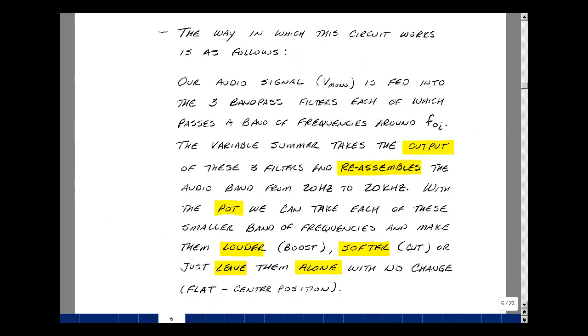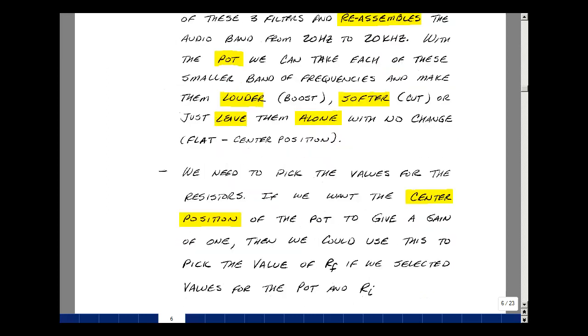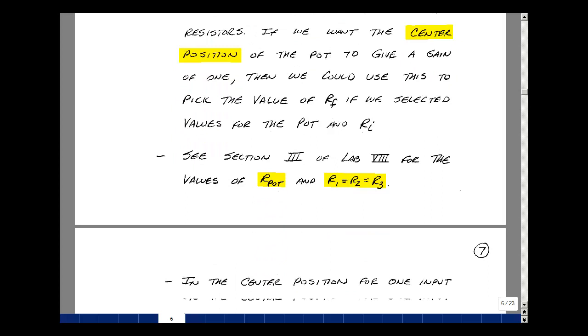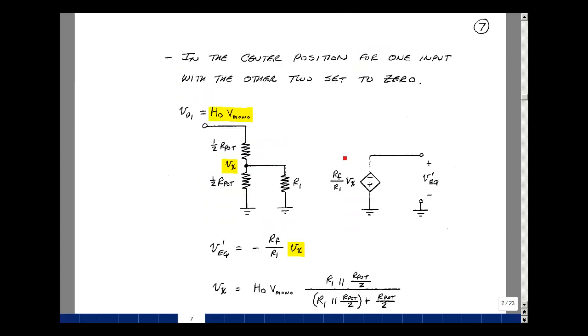Now next we need to pick the values for the resistors. If we want the center position of the pot to give a gain of one, then we could use this to pick the value of the feedback resistor if we select the values for the pot and the input resistors. If you look at section three of the lab, you'll see that there are values given for the pot and the resistors R1, R2, and R3. Again, I vary these each semester to get the results to be different from year to year.